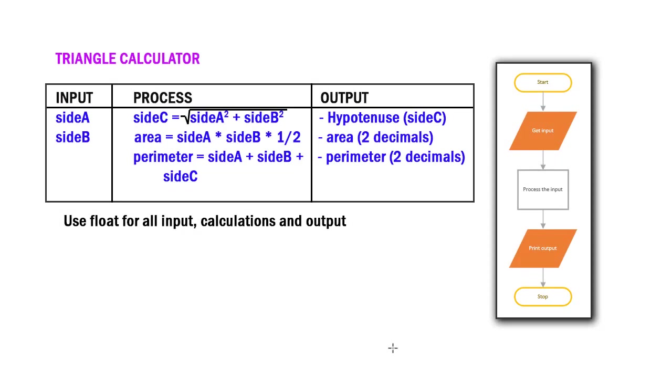So one of the tools we can use in planning our program is an IPO chart. So we have three columns, one for input, and we're going to get from the user side A and side B. Once we've secured those, we're going to go through the process of finding the length of side C or the hypotenuse of our triangle.